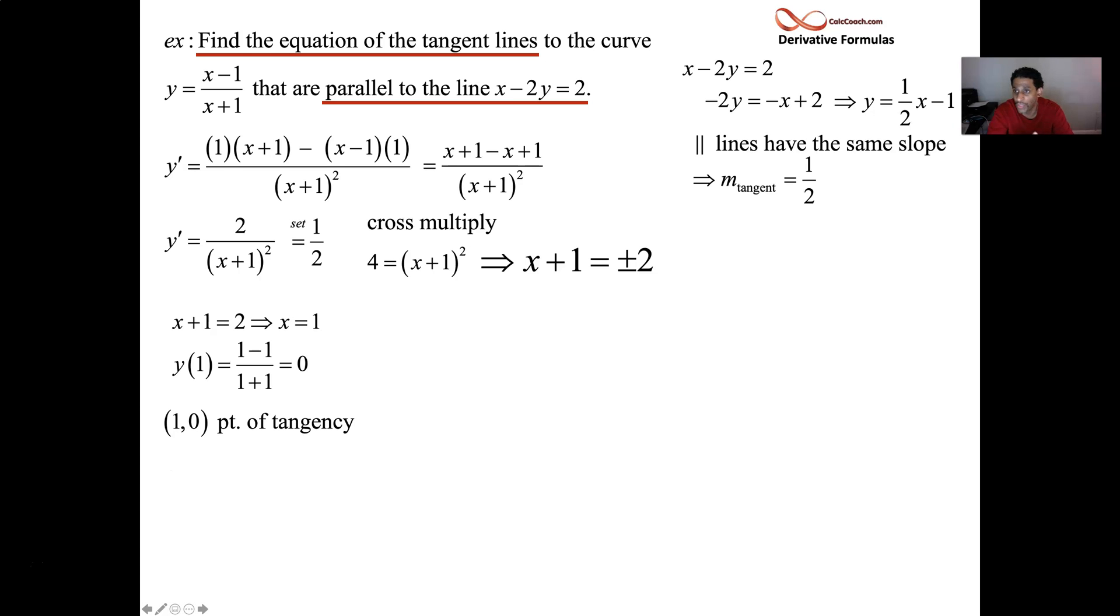So the equation of this tangent line is going to be: the y is 0, the x is 1, we plug in m as 1/2 and we'll get that b is -1/2. So y = (1/2)x - 1/2, parallel to y = (1/2)x - 1.